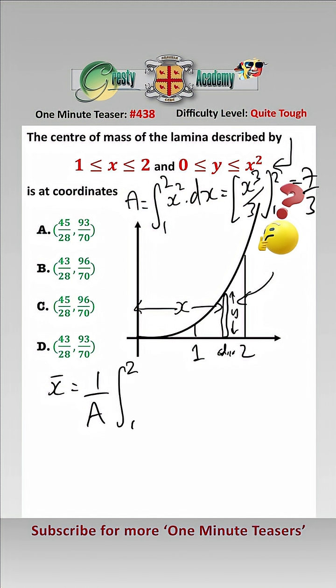Which equals 3 over 7 times x to the 4 over 4 between 1 and 2 which is equal to 45 over 28. So we have our x coordinate of the centre of mass.